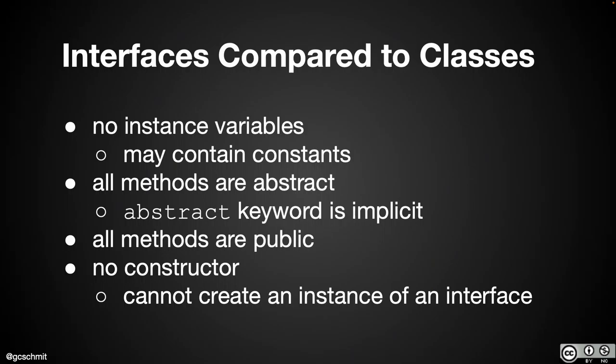Here are some differences between interfaces and classes. An interface cannot have any instance variables — it can have some constants, but we won't worry about that. Every method in an interface is abstract by default; we don't need to use the abstract keyword, it's implied. Abstract means there's no implementation — no curly brackets after the method header, just a semicolon. Every method in an interface is public; we don't have to say that either, it's implied. An interface has no constructor because we can't make a new object from an interface since it has no code.